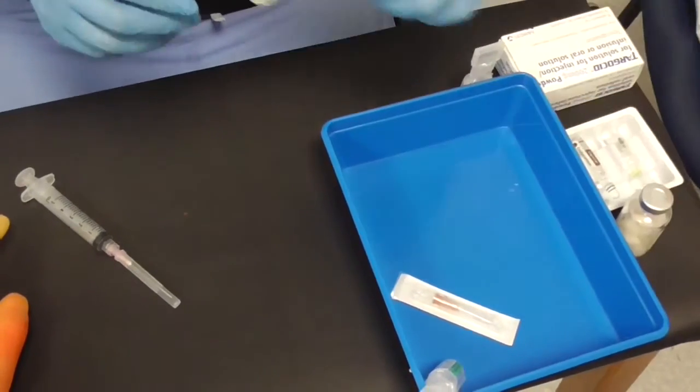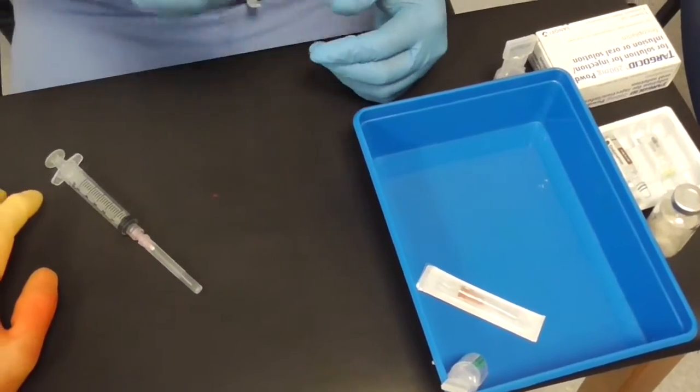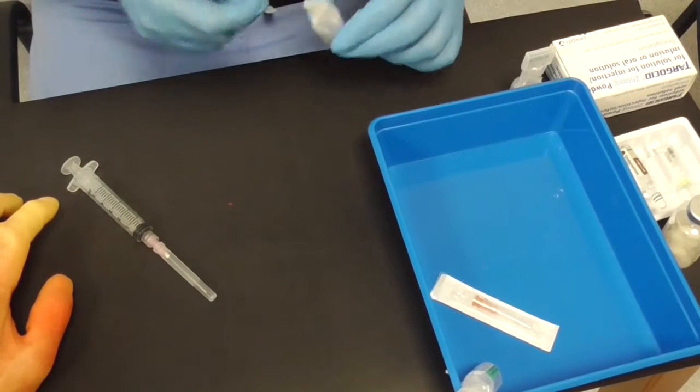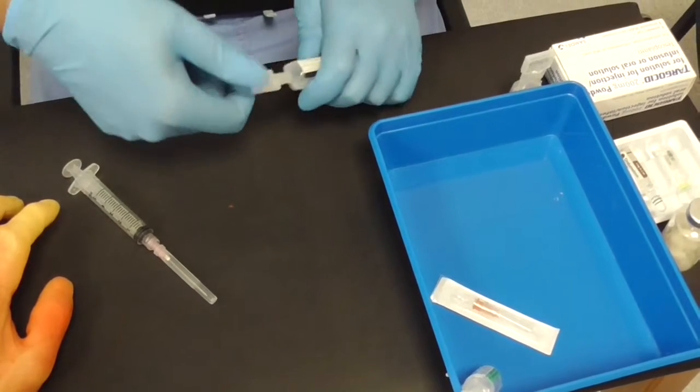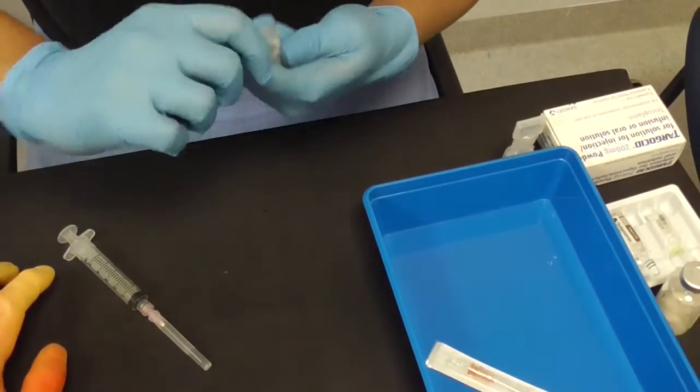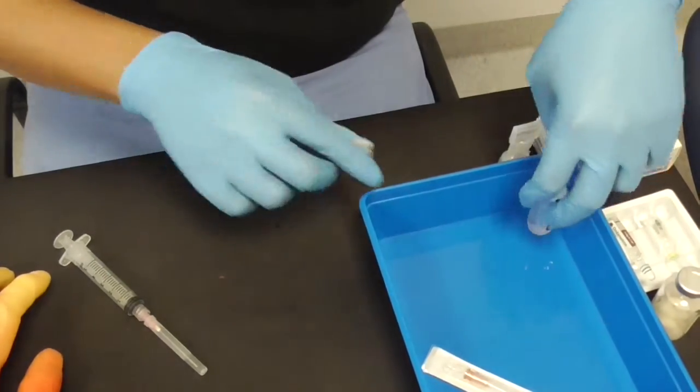Most things that you deliver intravenously will come in either a plastic bottle like this. The plastic bottles have a twist-off cap that you can twist off like that. Easy. And you've got a twist-off cap like that.